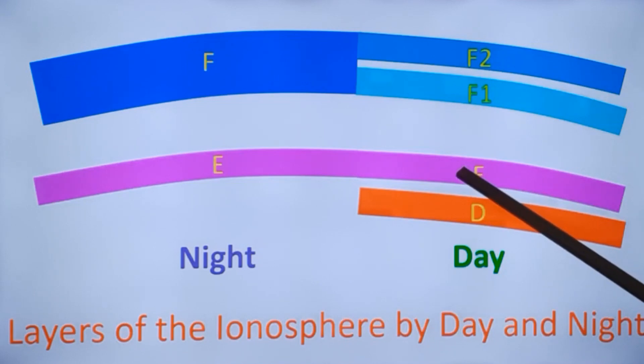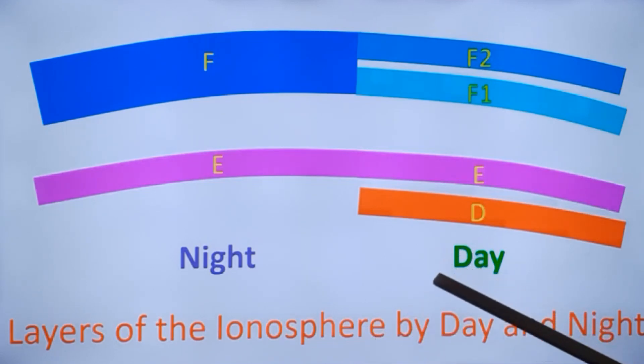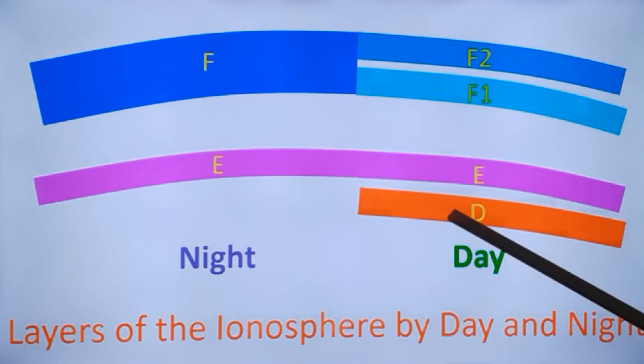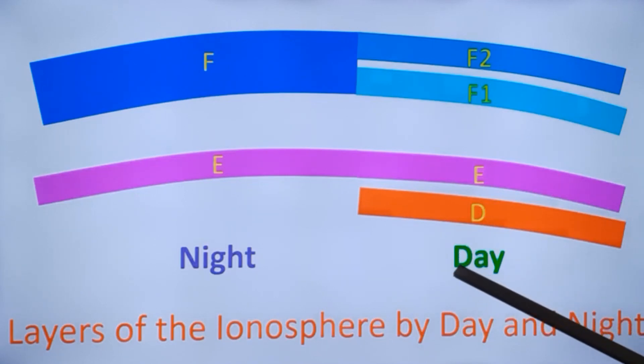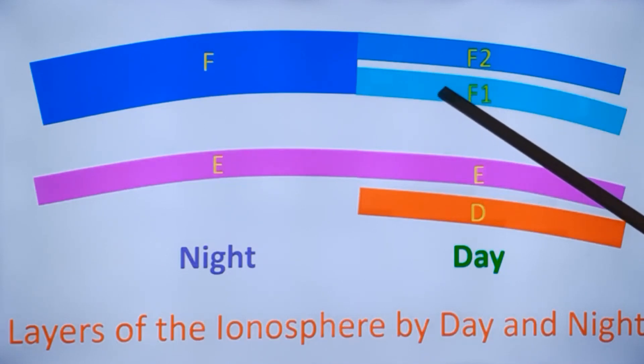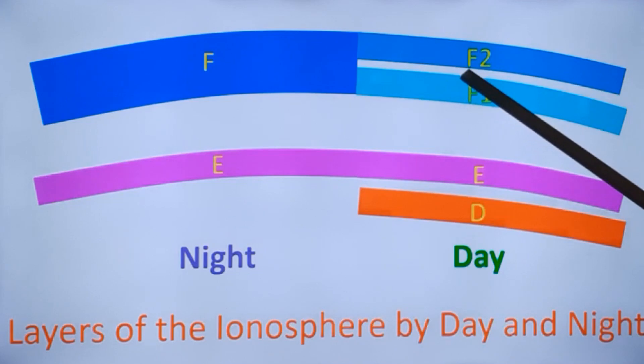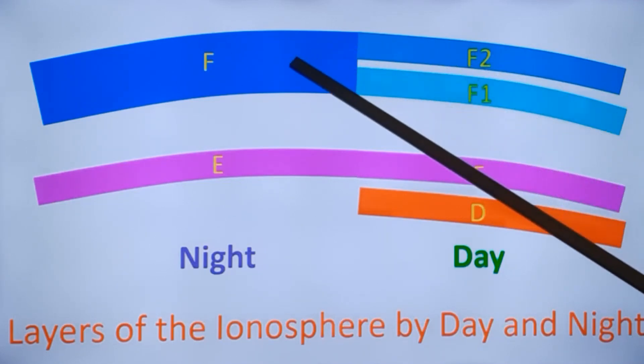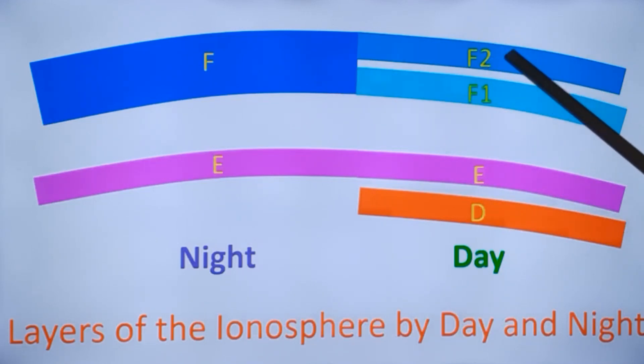E layer is the one which reflects the short waves usually, because short waves will not be absorbed by the D layer and they will be reflected by the E layer. Still higher frequencies in the short waves will go beyond the E layer and get reflected from the F1 or F2 layer. The difference between F1 and F2 is that when there is higher ionization during daytime, the F layer splits into two, F1 and F2.